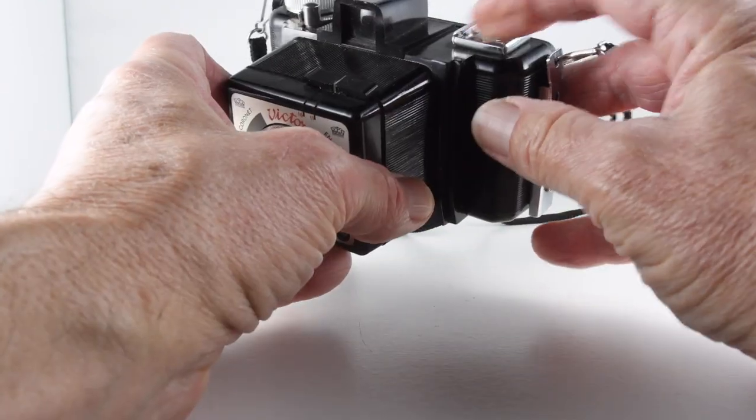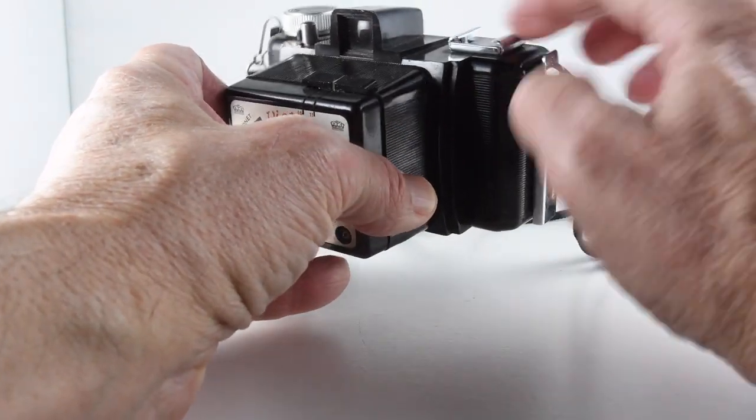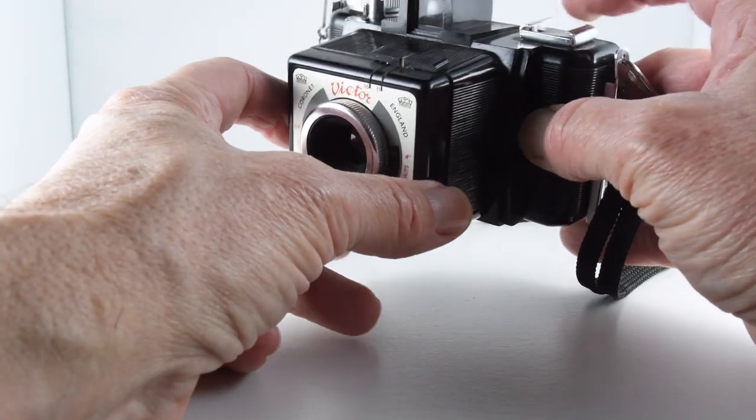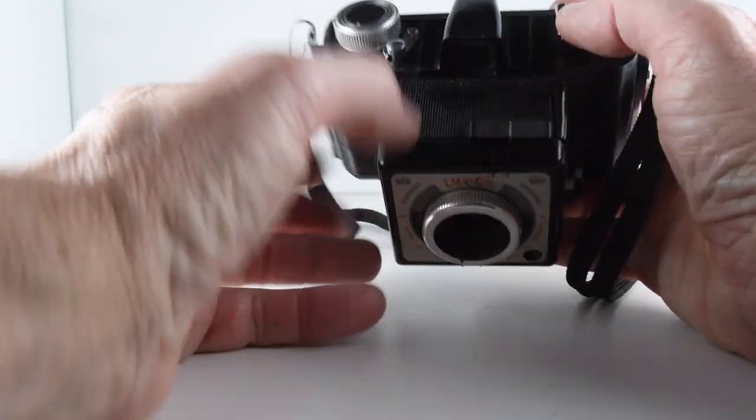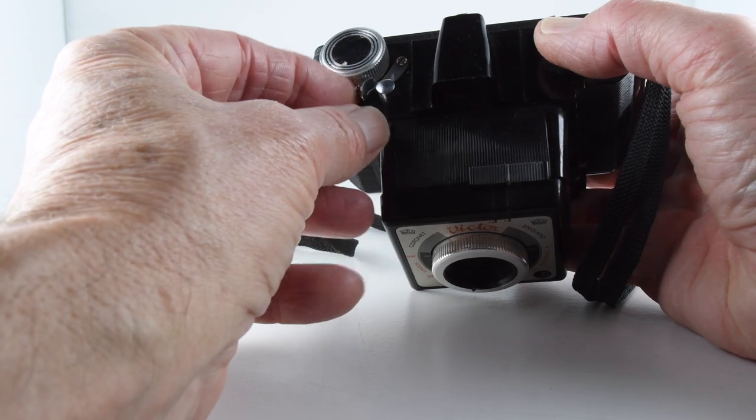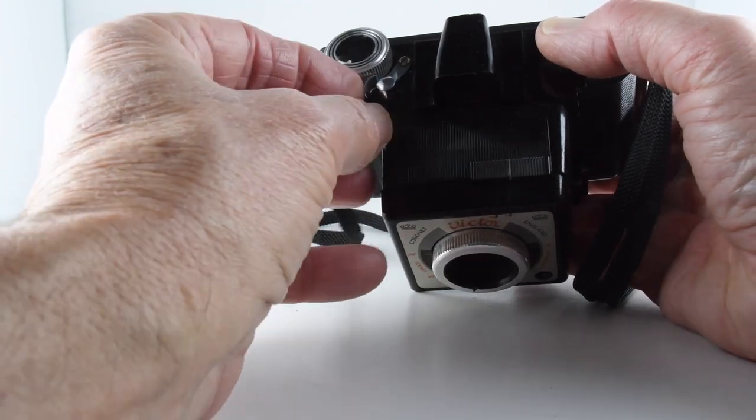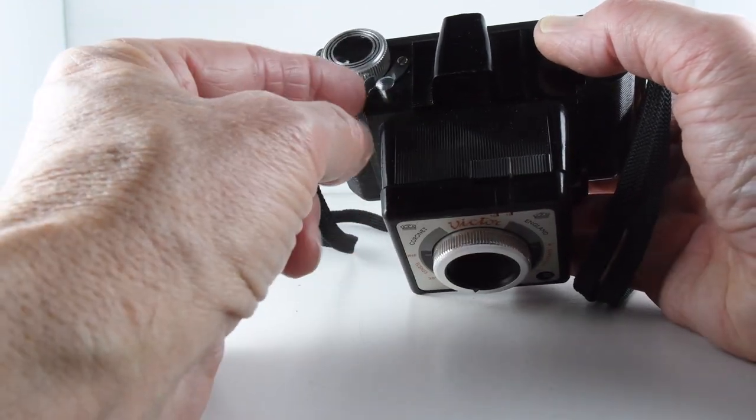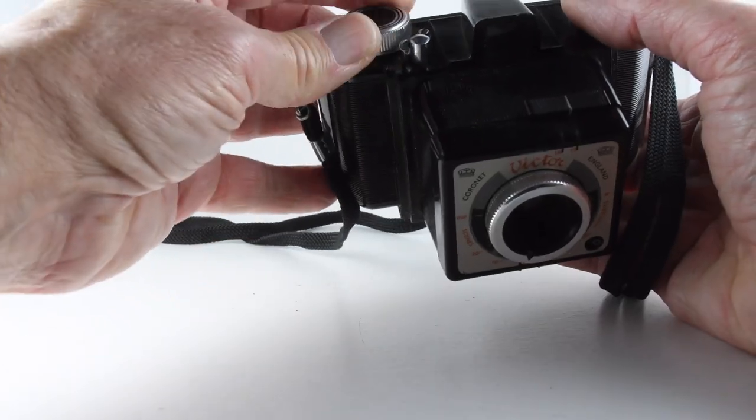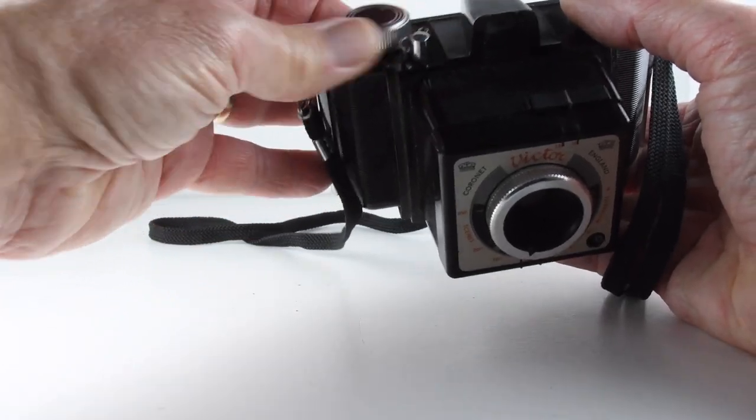We have a flash hot shoe, a cold shoe rather, but our flash port synchronization port is there. And then we have our shutter button which has an on-off or a locking mechanism made of metal there. And then our film advance that we wind on.